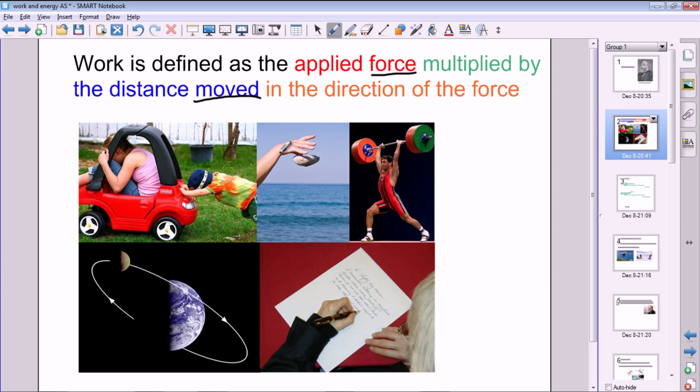So here we've got five little scenarios and we're going to have a look to see if work is being done in these situations and if so by which object. In this first one we've got a little boy pushing his possibly mother or sister in a little toy car, and work is being done here because there's a force being exerted by the little boy in this direction and the distance moved by the object is in the same direction. So work is being done by the little boy on the little toy car.